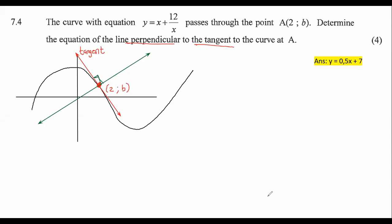So our goal for this question is to find the equation of this green perpendicular line. That green line is Y equals MX plus C. It's worth four marks, so we've got quite a few things to do.